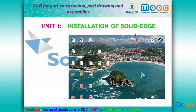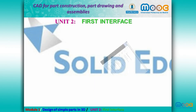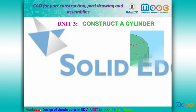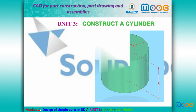Unit 1, we are going to explain how to install Solid Edge. The installation is quite easy. Unit 2 is the first interface, and we will state the exact content of this MOC, because Solid Edge has many tools for different applications. Unit 3, we are going to construct our first simple part, a cylinder.